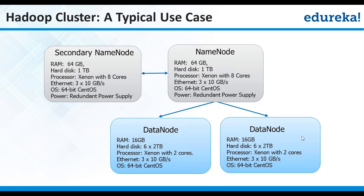For a typical cluster use case, you need to have excellent RAM for the name node. Hard disk is not that important. You need multi-cores. Make sure you have multiple ethernet interfaces. Go for a 64-bit operating system and make sure there is redundant power supply — that is common in a typical data center. You'll have two paths where in case one power supply fails, you'll have a second available. You'll have an identical secondary name node. When implementing a secondary name node, the configuration should be exactly identical to your name node.